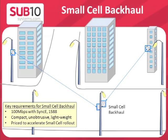This slide shows a typical small cell backhaul deployment for urban metro cells. LTE small cell base stations may be mounted on lampposts or other street furniture, and this requires backhaul links to be as small as possible — the ideal application for the Subten Liberator V-Band links.